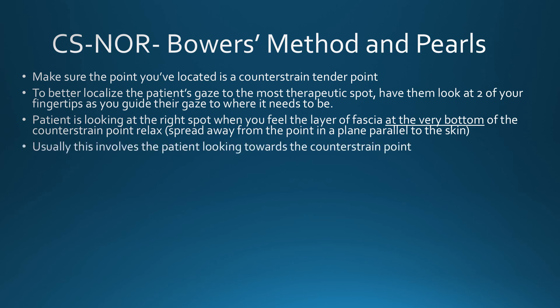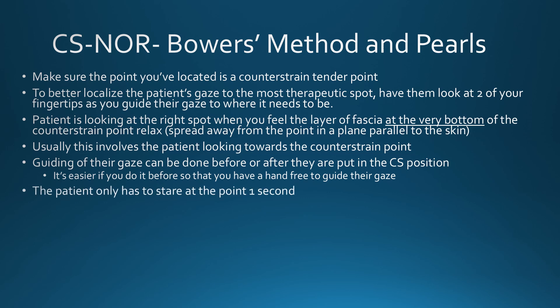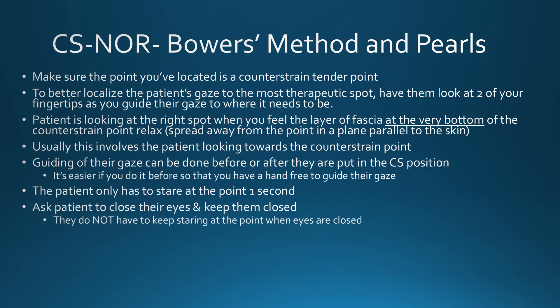Usually the direction they need to look is towards the point, but not always. You can direct their gaze to the therapeutic spot before or after they are positioned in the counterstrain position of ease. It's easier if you do it before, so that you have a hand free to guide their gaze, because once you have them in position, one hand may be holding them in position and the other is monitoring the point. They only have to stare at the point for one second. When I feel the taut trampoline at the bottom of the counterstrain point become less taut, I'll wait half a second and then ask the patient to close their eyes and keep them closed. Once their eyes are closed they can just relax them. Then move the body into the treatment position for the counterstrain point you are treating.